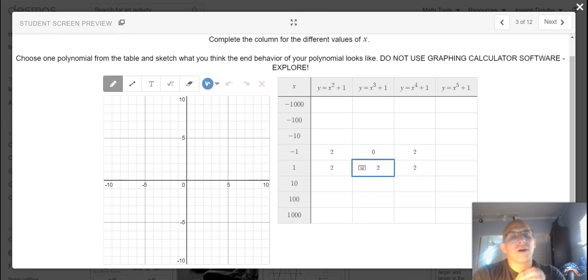However, when we substitute a positive value into the function, one cubed is one plus one is two, and that same behavior occurs with our fifth degree function.